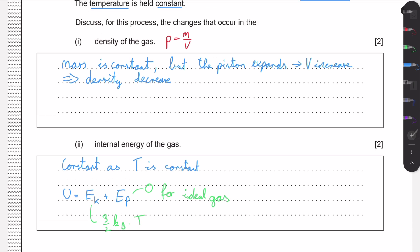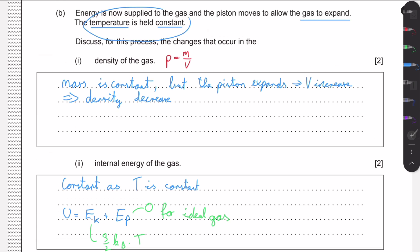Whenever we're told that the temperature is held constant for an ideal gas, we can just remember that the internal energy will not change either. And that's how you solve question 2 in this paper. I hope I was able to help, and see you in the next video.